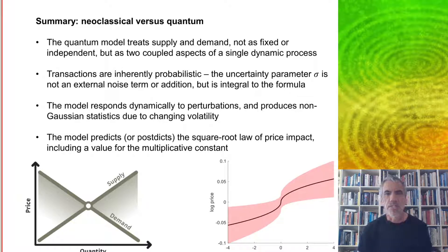So to summarize, the quantum model treats supply and demand not as fixed or independent but as two coupled aspects of a single dynamic process. Transactions are inherently probabilistic so this uncertainty parameter sigma is not an external noise term or addition but it's integral to the formula. The model responds dynamically to perturbations and produces non-Gaussian statistics due to this change in volatility. Finally, the model predicts, or really post-dicts since we knew the answer, the square root law of price impact including a value for the multiplicative constant.